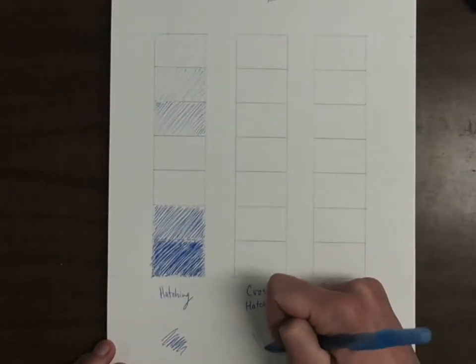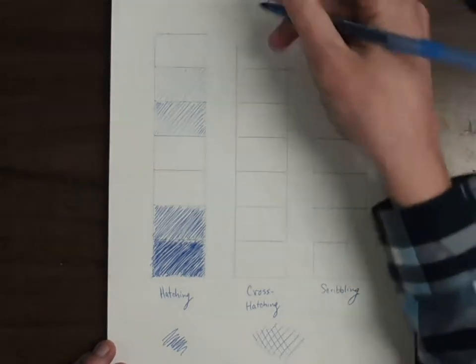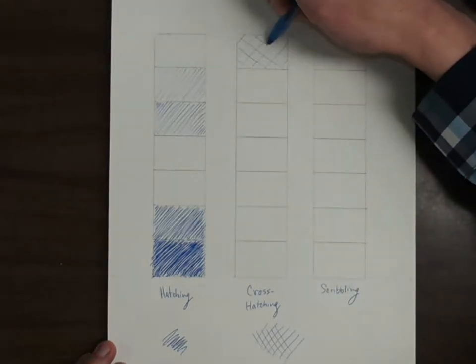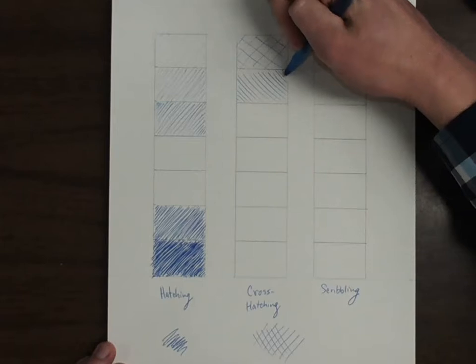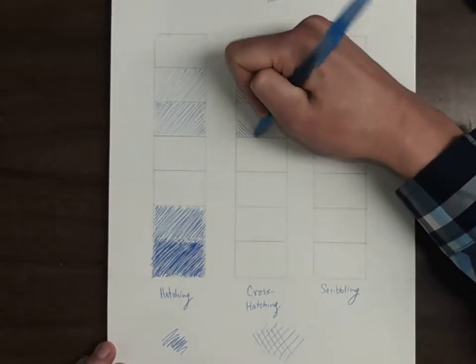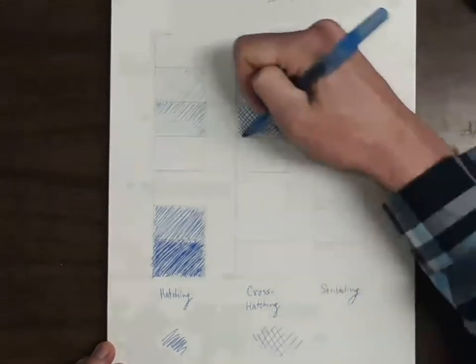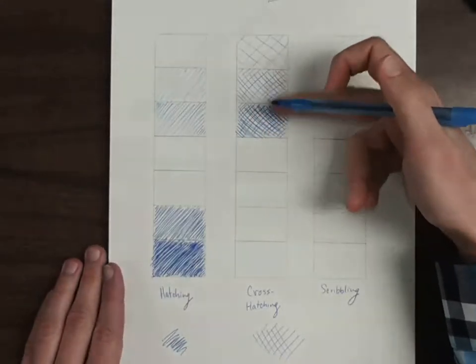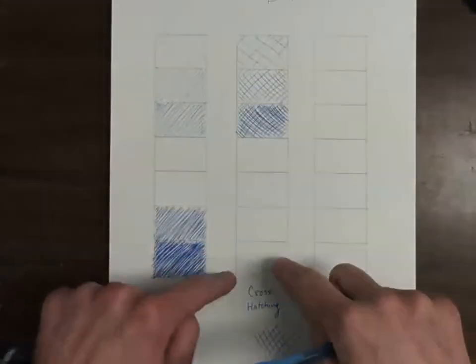Now for cross-hatching, we are making our lines again, but then coming in and making like X's. So once again, pressing very light with my pen, super spaced out. I'm going to come and go the perpendicular way, the exact opposite way, and that's my cross-hatching. Then I'm going to come in and build up some more value, add a little bit more pressure as well as more lines. Sometimes it's nice to take a step back and look at your picture from afar, so then you can see, is this one actually darker?